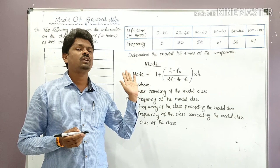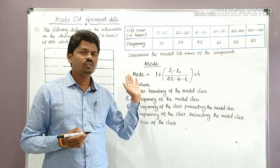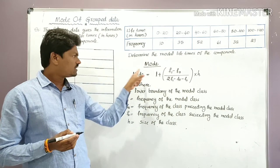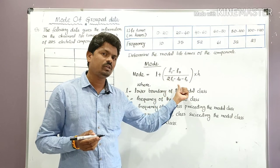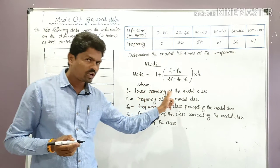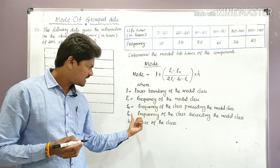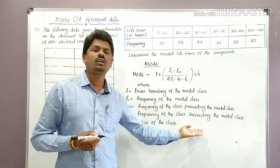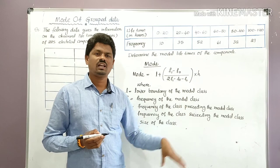This is very important — every time the exam asks for two marks, you must write the formula to find the mode of grouped data and explain each term. Write: Mode = L + (F1 − F0)/(2F1 − F0 − F2) × H, where L is the lower boundary of the modal class, F1 is the frequency of the modal class, F0 is the frequency of the class preceding the modal class, F2 is the frequency of the class succeeding the modal class, and H is the size of the class.